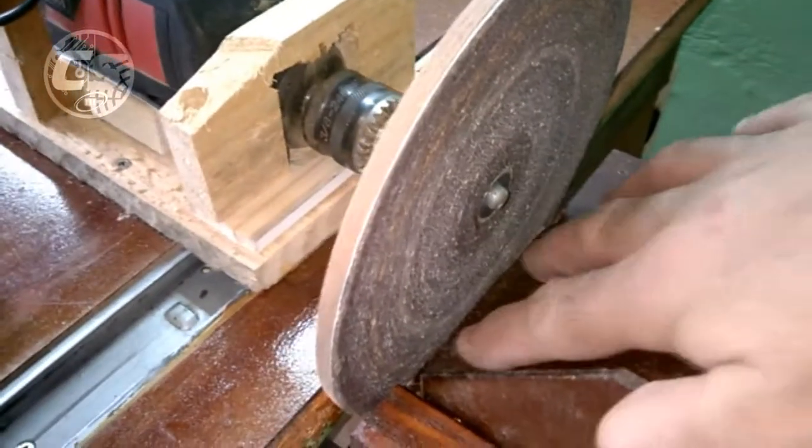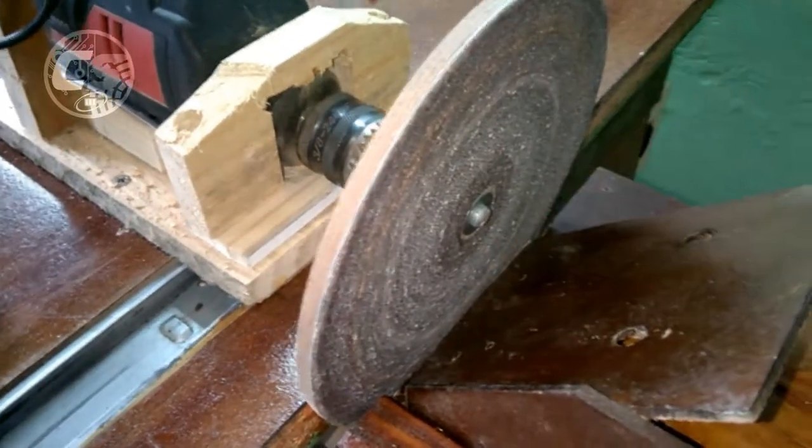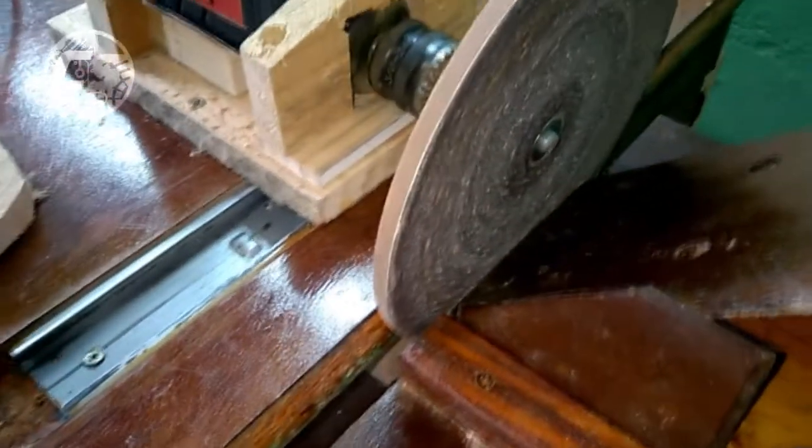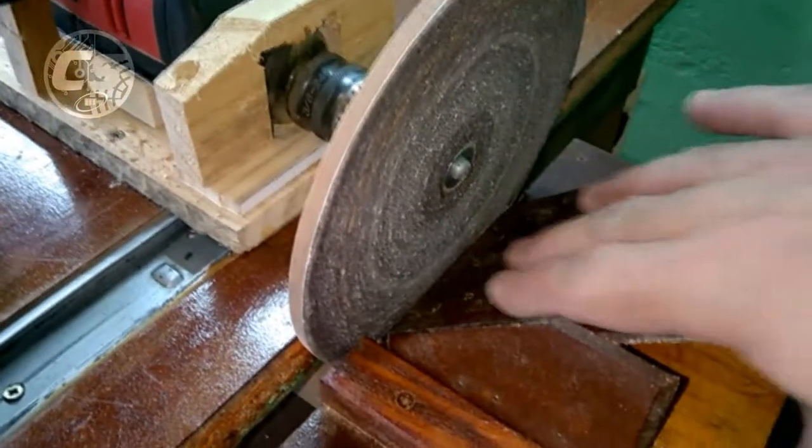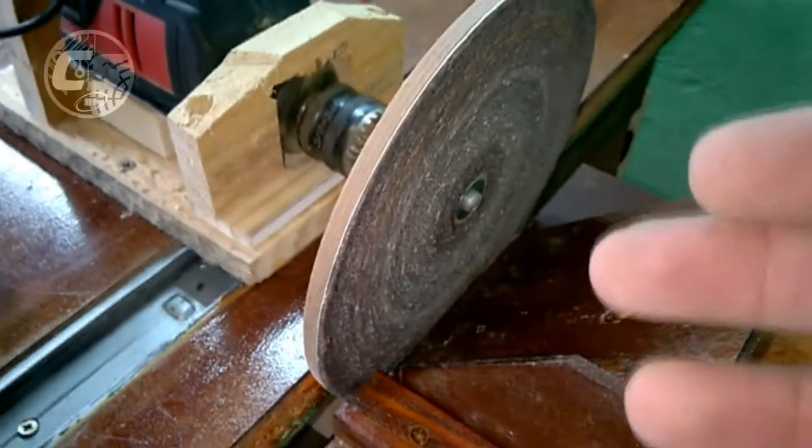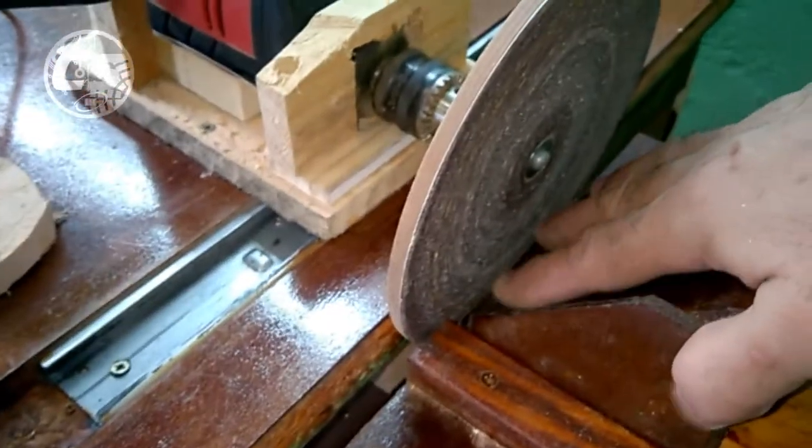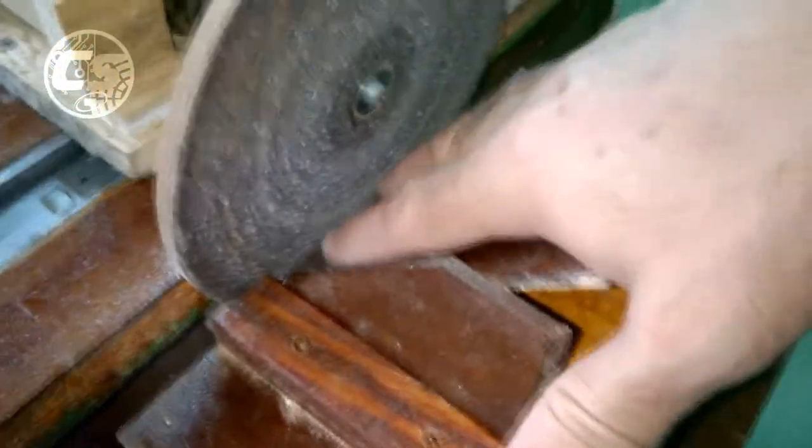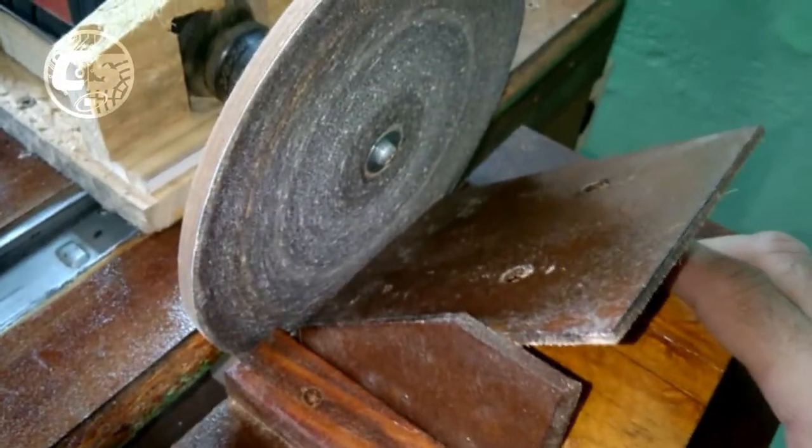In general I use this jig to sand MDF, for example if I'm going to make a box. To join the box pieces together, it's better to do 45 degrees. Then I either use a router or I use this here. When the piece is very small I do it here for the sanding, or circular sanding.